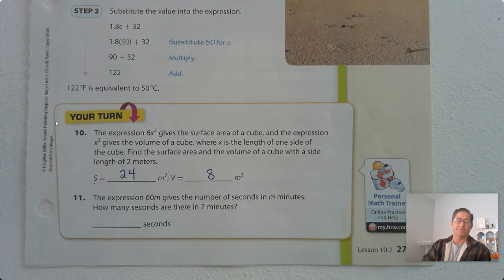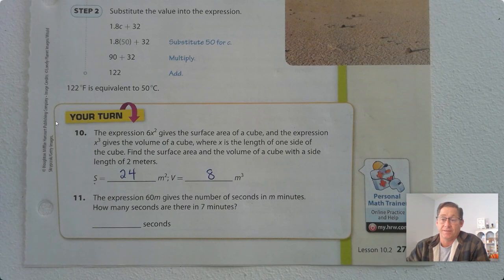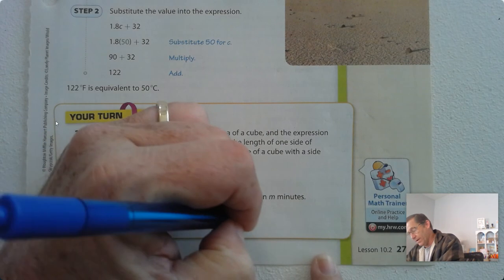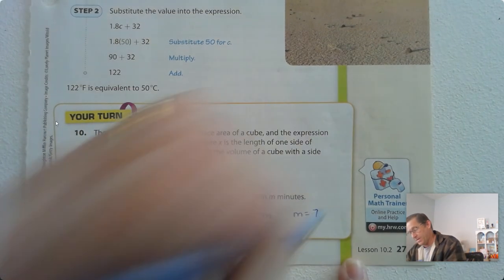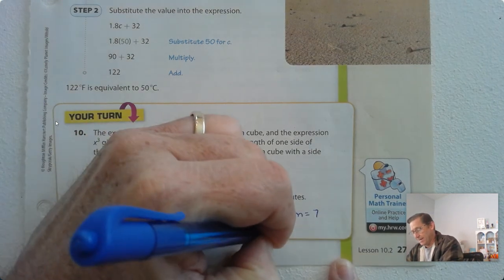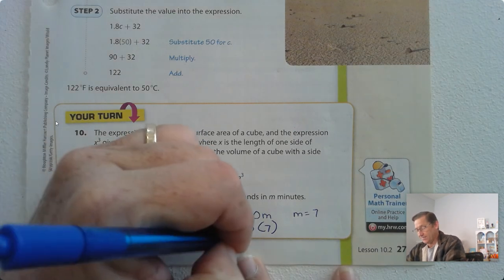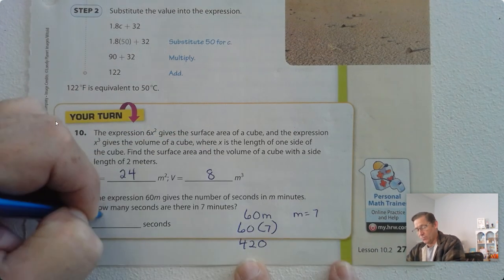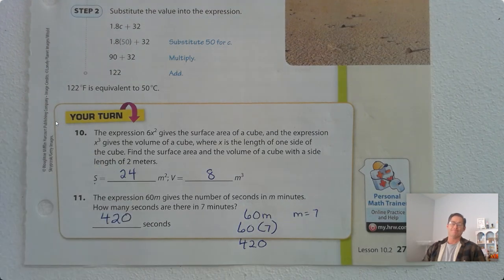Number 11: 60 times m gives the number of seconds in m minutes — there are 60 seconds in a minute. How many seconds are in 7 minutes? We have 60m, and m equals 7. So 60 times 7: 7 times 6 tens is 42 tens, or 420.